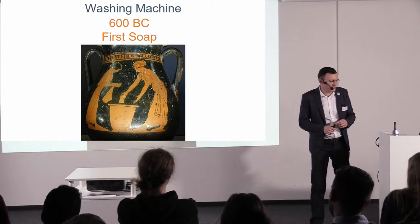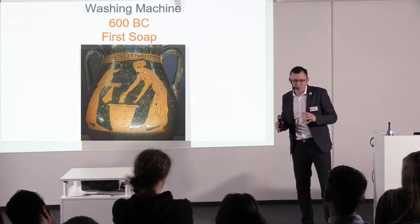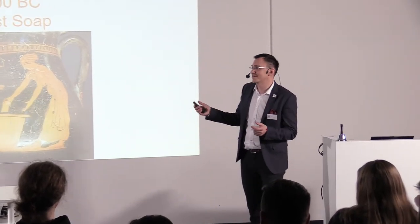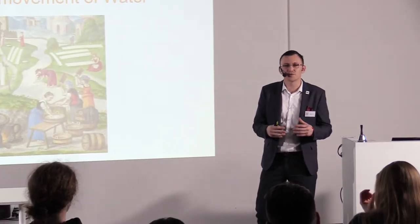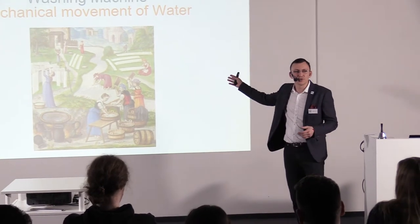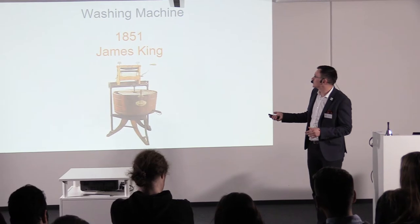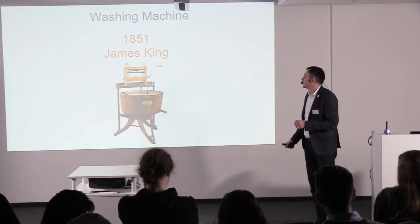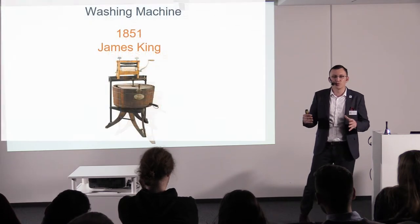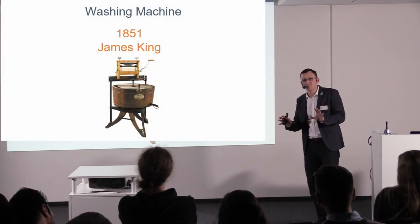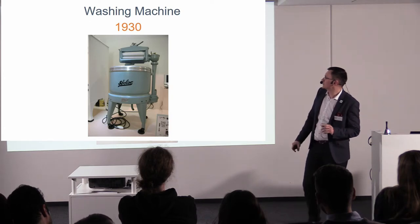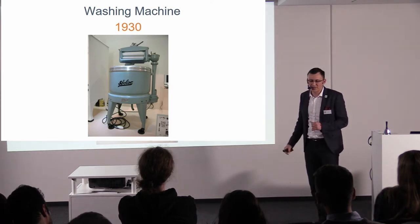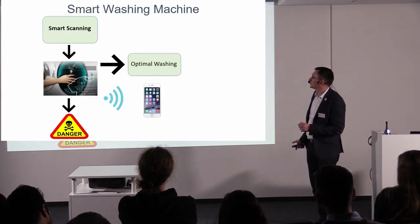Now let's speak about the washing machine. We know that people started to use soap around 600 years before Christ. People found that mechanical movement of water can wash mud and dust from clothes better, so people went to rivers and similar places. From 1851, James King created a manual washing machine based on the same technology. Until today we have the same concept, but with an electric engine inside — from 1930 it was created by many companies. Now we will go to the smart washing machine.